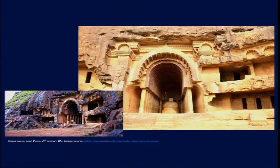For example, here on screen we have images from the Bhaja Caves, which are today in the state of Maharashtra and were made in the second century BC. These two images tell us very clearly how these caves were excavated from the living rock structures. It was a principle of Buddhist architecture to make use of living rock structures so that no other materials need to be utilized for erecting a building from scratch.